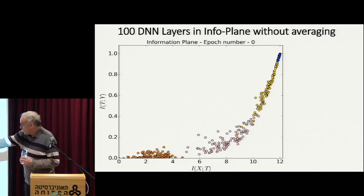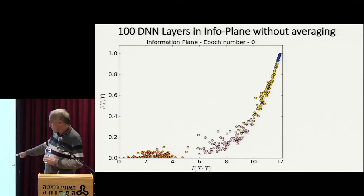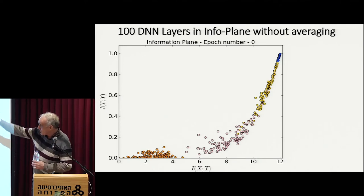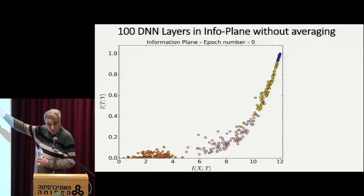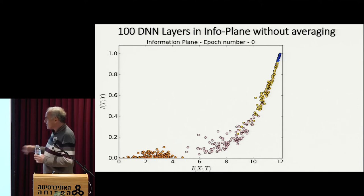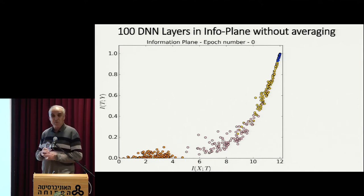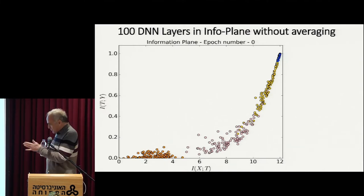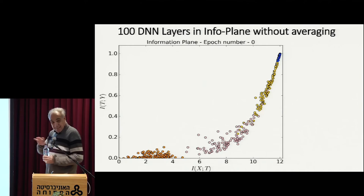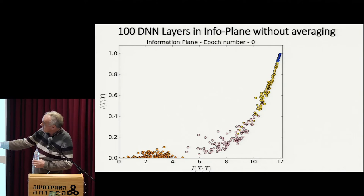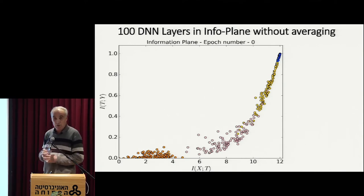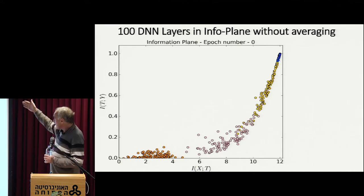What you see here is what I call the encoder information on the left axis, which is IXT, and the decoder information — the optimal decoder information — on the right. This is a very small problem: it has only 12 bits of entropy in the input, so 12 binary inputs. So it's very small, but then I can estimate everything exactly — both the information and the entropy and everything. The output information is bounded by one bit — it's a Boolean function.